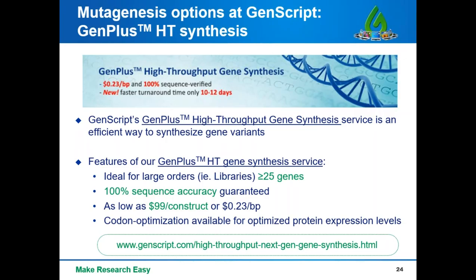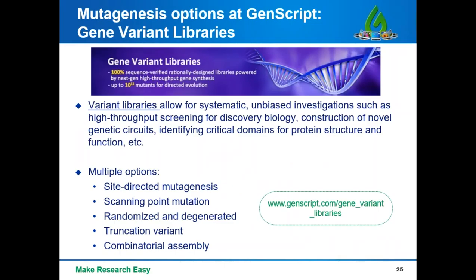Another service we offer is our high-throughput service called GenPlus HT gene synthesis. This might be especially useful if you want to create libraries of variant genes, as it is designed for large gene orders — usually more than 25 genes. As with other de novo gene synthesis services, it offers 100% sequence accuracy guaranteed. Our pricing is as low as $99 per construct. We can also offer a free codon optimization service using an algorithm to optimize protein expression levels, which we can provide at no extra cost when you're requesting gene synthesis.